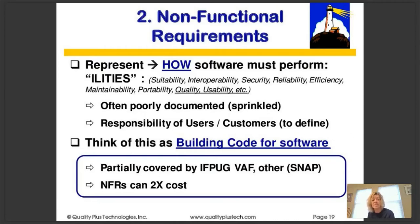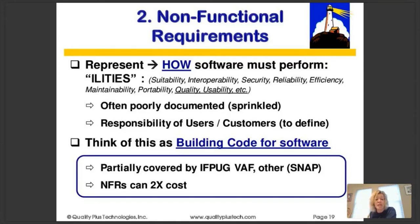Non-functional requirements are partially covered by something called the value adjustment factor within function points. There's also another method called the Software Non-Functional Assessment Process (SNAP) that sizes the non-functional aspects of software. Non-functional requirements or NFRs can double the cost of a piece of software. So we have the floor plan sized in function points, and then the non-functional requirements — covering how good, how well it must perform, how fast, how secure — addressed through the value adjustment factor or SNAP.